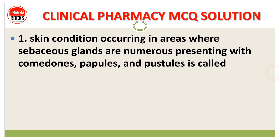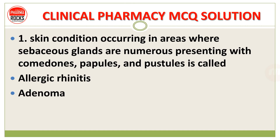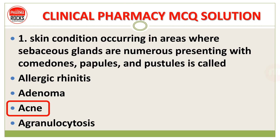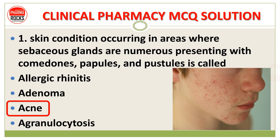Question number 1: A skin condition occurring in areas where sebaceous glands are numerous, presenting with comedones, papules, and pustules — is it allergic rhinitis, adenoma, acne, or agranulocytosis? The right answer is option C, acne. The skin condition on the face presenting with papules, comedones, and pustules is called acne.